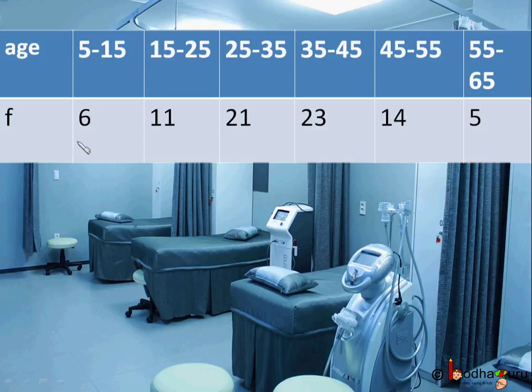Now which age group has the highest value? 35 to 45 age group. That is the modal class. The modal class is 35 to 45 with a frequency of 23, the highest frequency.